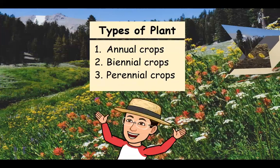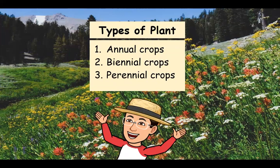Many field crops die after bearing seeds; they are referred to as annual crops, completing their life cycle in one growing season — the cycle starts with a seed and ends with a seed. Some crops need two growing seasons to complete their life cycle; they are called biennial crops. Examples of biennial crops are carrot, cabbage, lettuce, turnip, and cauliflower. They grow vegetatively during the first season and bear fruit and die during the second season. Perennial crops grow from year to year; examples include asparagus and bamboo.